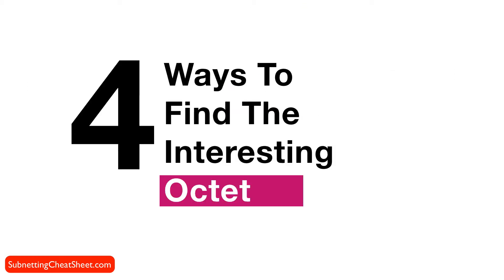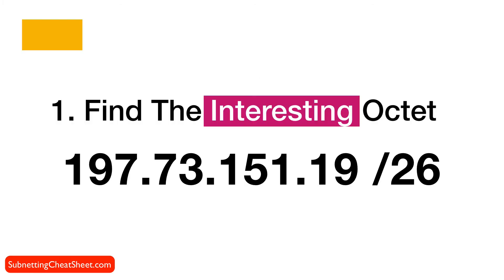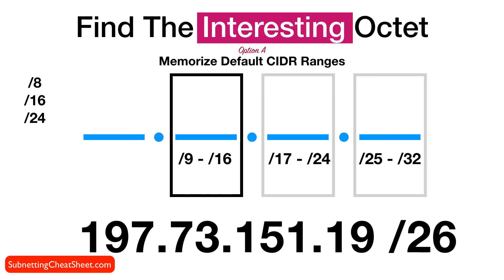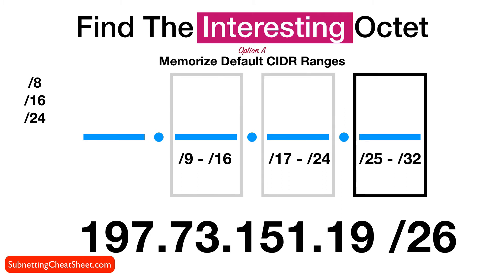There are actually four ways to find the interesting octet. If you're presented with the IP address as well as the CIDR, you need to figure out which of the four octets to focus your energies on. One way is to just memorize the default CIDR ranges: if it's /9 to /16, you focus on the second octet; if it's /17 to /24, you focus on the third; and if it's between /25 and /32, you focus on the fourth. So with /26, that fourth octet is the one you would focus on.